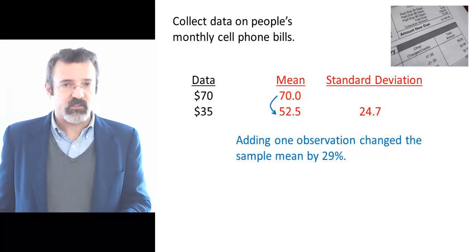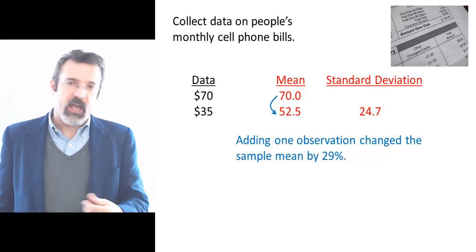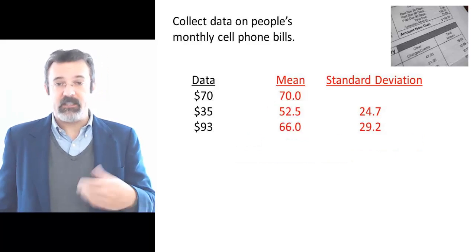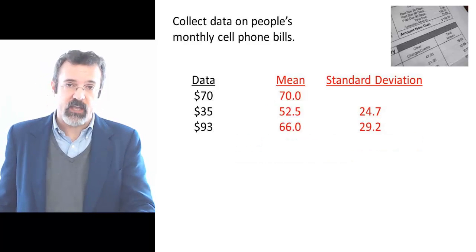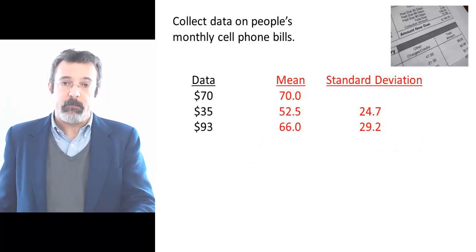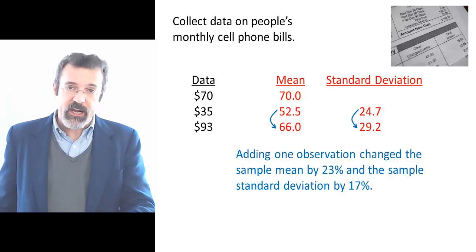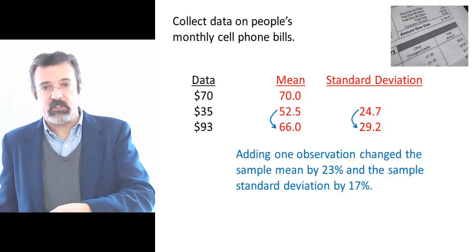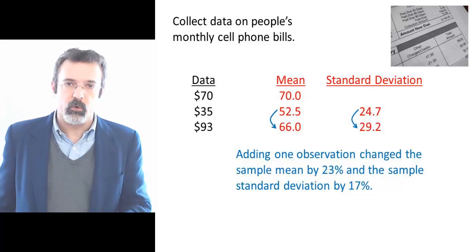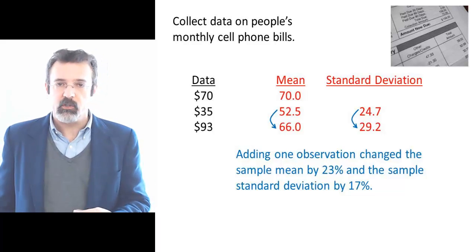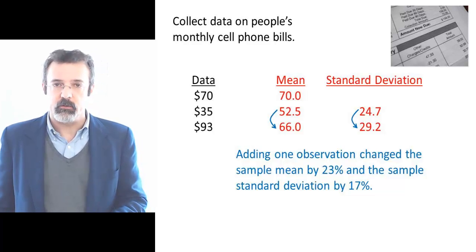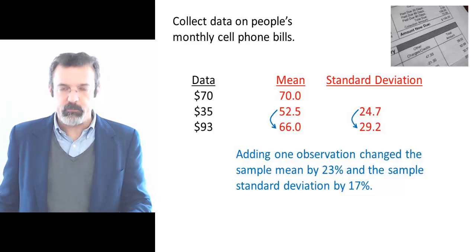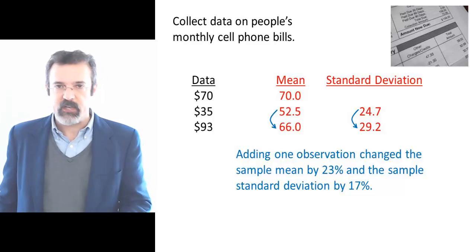So let's ask a third person. This third person had a bill of $93. Adding this person's bill to our dataset causes the mean to change from 52.5 to 60, and the standard deviation to change from 24.7 to 29.2.